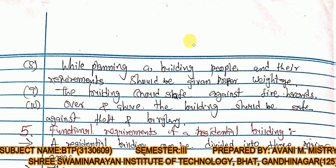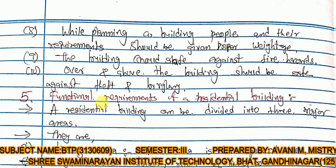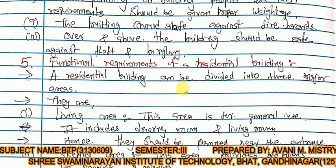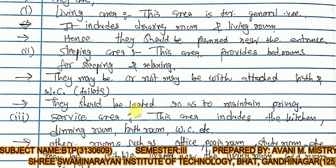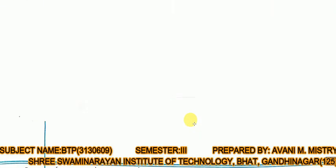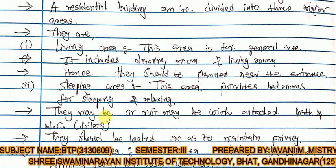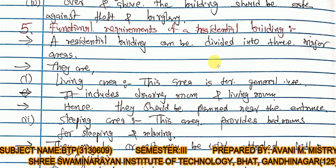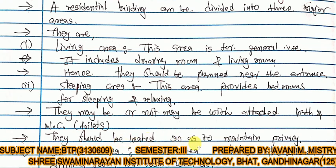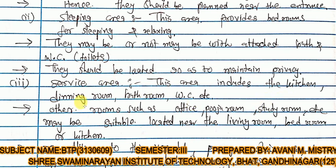Functional requirements of a residential building: a residential building can be divided into three major areas — first is the living area, second is the sleeping area, and third is the service area. The living area is for general use and includes the drawing room and living room; they should be planned near the entrance. The sleeping area provides bedrooms for sleeping and relaxing, which may or may not have attached bath and WC, and should be located to maintain privacy.